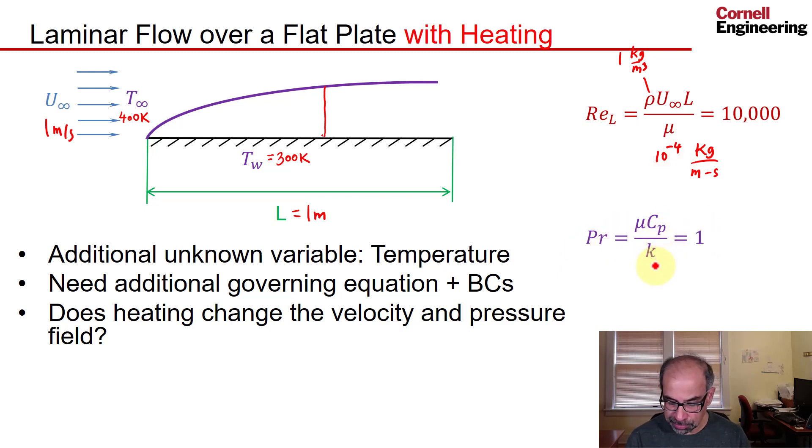I'll take K to also be 1 watt per meter per Kelvin, which means I need to specify Cp, the specific heat at constant pressure, to be 10 to the power of 4 joules per kg per Kelvin. That's because mu is 10 to the power of minus 4, so that'll give us a Prandtl number of 1. This doesn't correspond to any real fluid. What we are interested in are the values of the non-dimensional parameters.